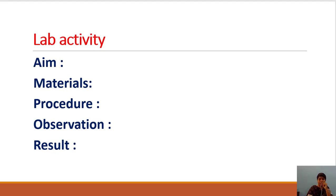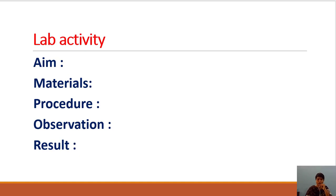We have to write the lab activity record: Aim — to observe mitochondria present in onion peel cells. Materials required — Janus Green solution, watch glass, brush, forceps, onion, compound microscope, paper, beaker with water. Procedure — prepare Janus Green B solution, take onion peel, place it in the solution, then after a few minutes place on a glass slide, put a cover slip over it, and observe under the microscope. In the observation, draw a sketch of the cells observed; in the result, write what you observed.